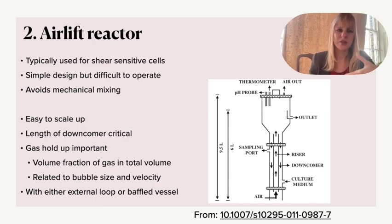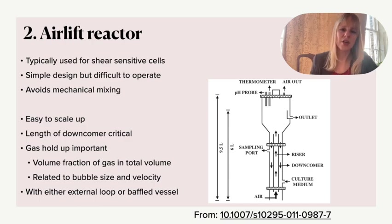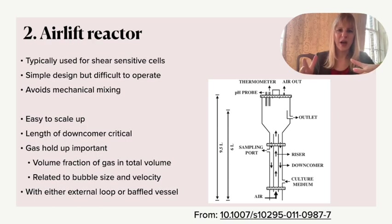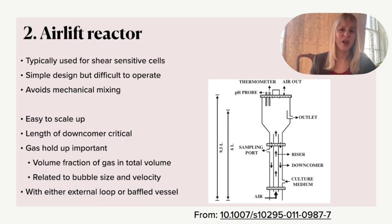The gas holdup — the volume fraction of the gas compared to the total volume — is very important when you consider bubble size and gas velocity, which are also things to consider in your design. In general there are two common configurations: an external loop or internal baffles to promote transfer within the reactor. The most well-known large example was built by ICI Chemicals, and since I'm based in Newcastle this was fairly local technology, which was used for the production of corn.